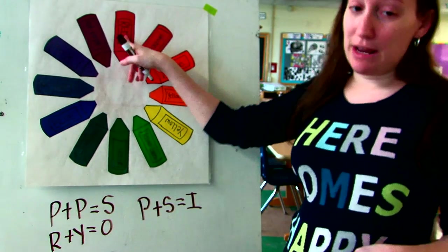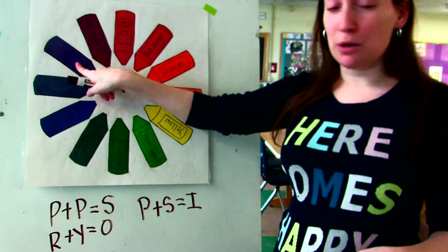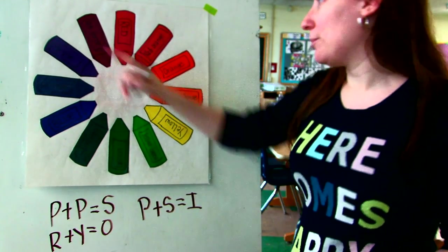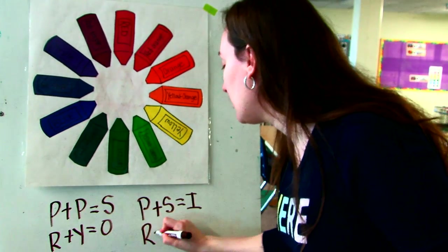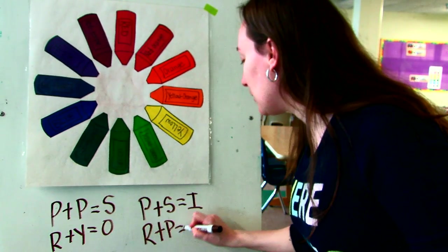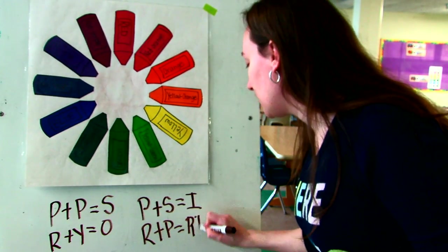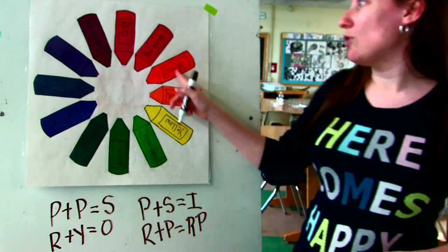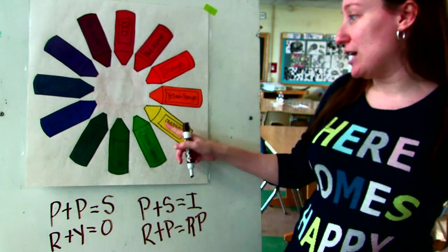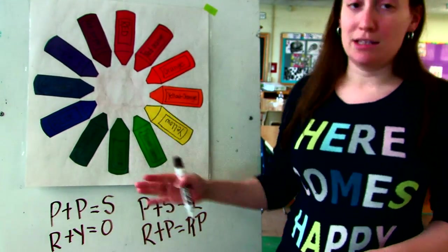So for instance, red plus purple equals red-purple. Red and orange, red-orange. Orange and yellow, yellow-orange, and so on.